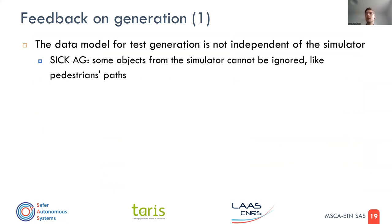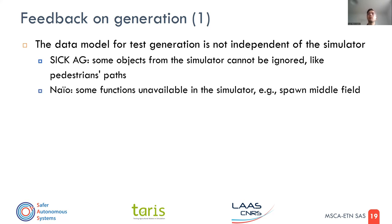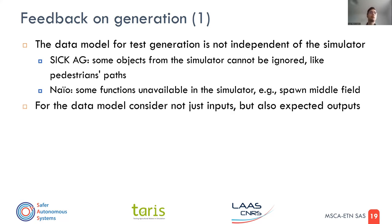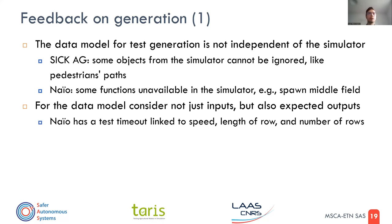We have to interface with those paths — you cannot create something different and try to fit it inside. For NIO, for example, we wanted to model missions where the robot would spawn in the middle of the field, but this was not possible because they are still developing the simulator and will introduce this feature in next releases. Also, the data model should consider not just the inputs but also the expected output.